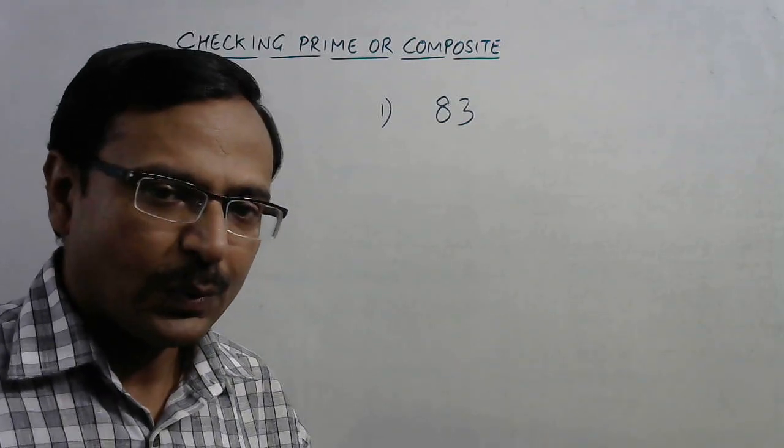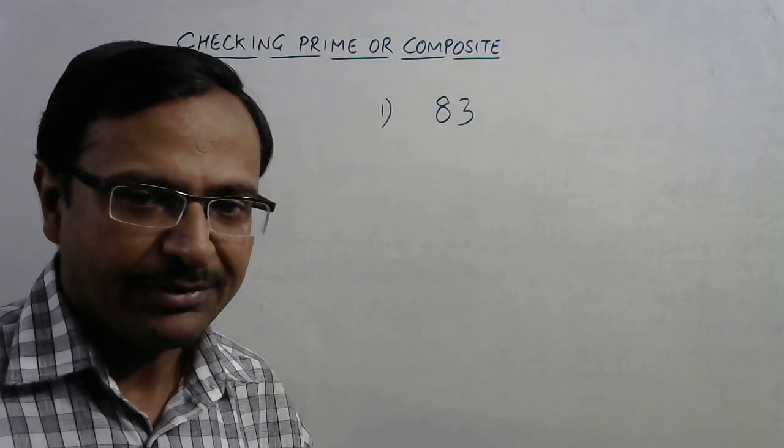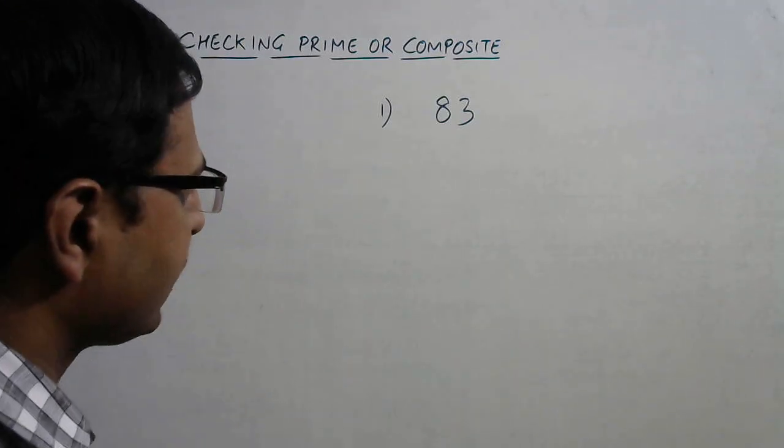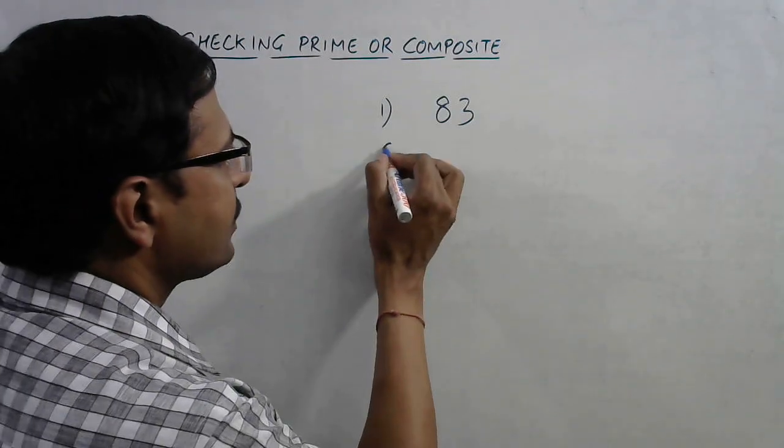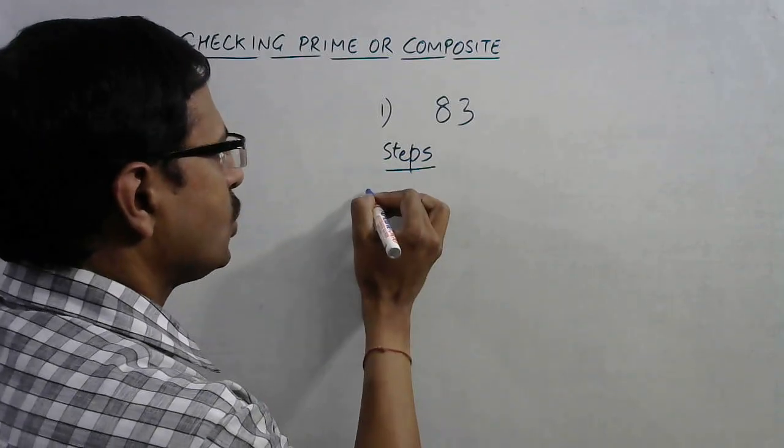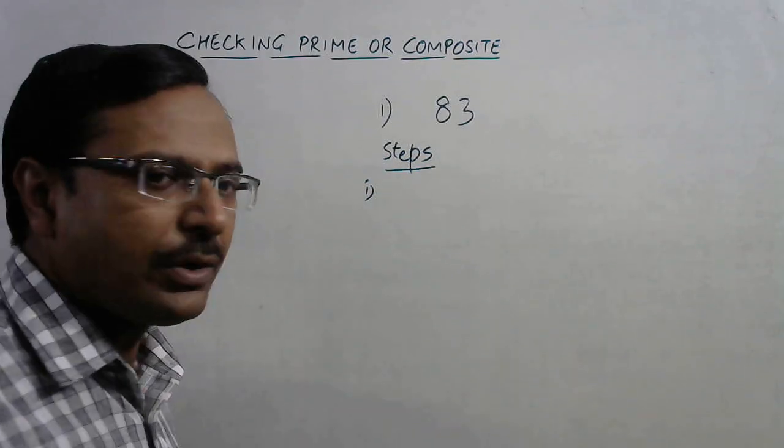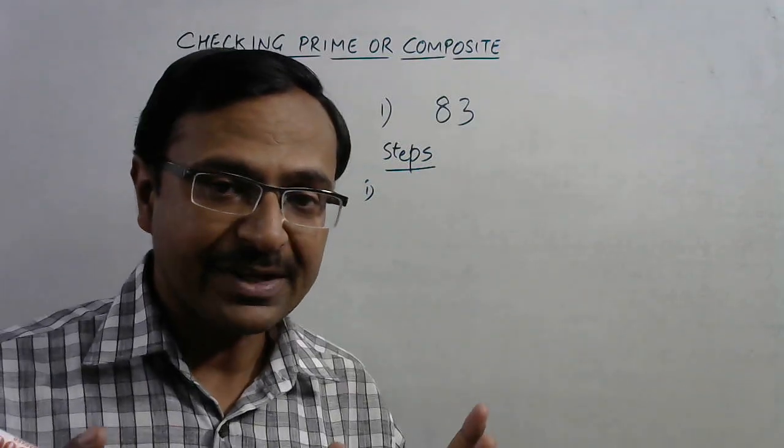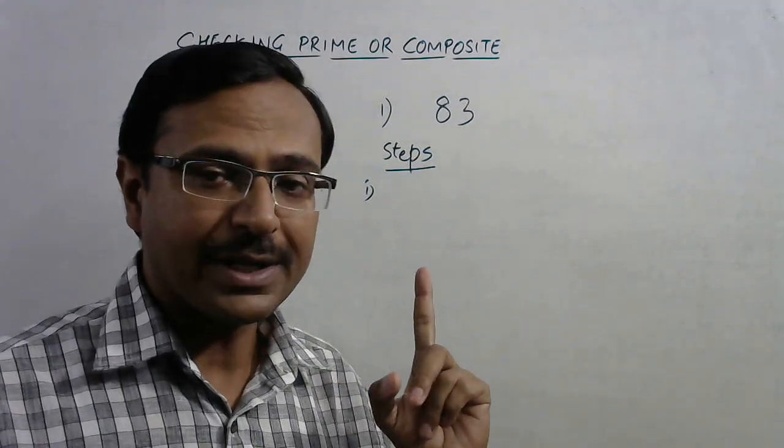We all know that 83 is prime, but how to test whether this is prime? Now my intention is to tell you the method first, so I'll write all the steps here. So the first step is to find out a number which is a perfect square and which is just more than this number, 83.